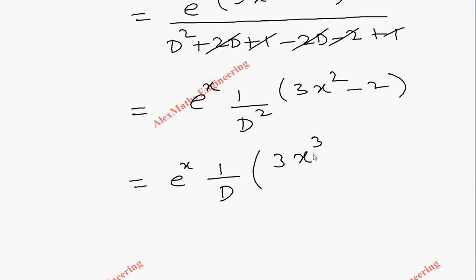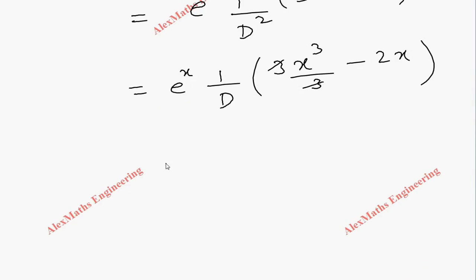Integrating, we get e to the power x times x to the power 4 by 4 minus x squared.